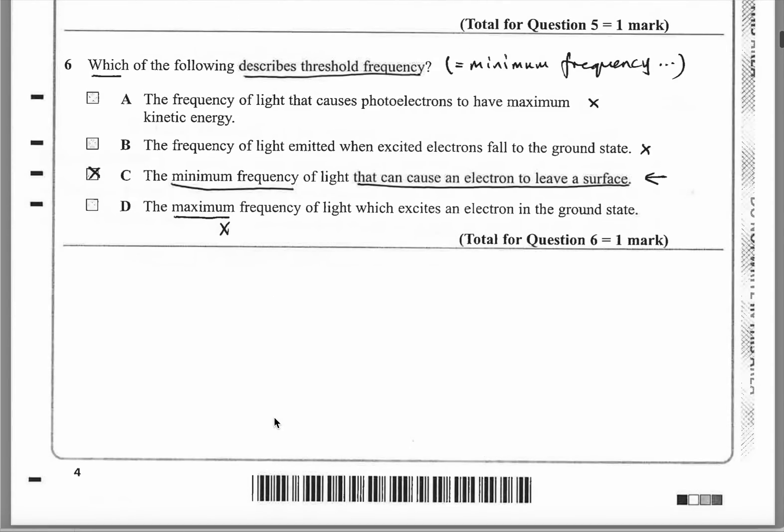Question 6 is the photoelectric effect. Which of the following describes what threshold frequency means? If you go straight to the answer, this is the answer - it's just knowledge. The minimum frequency of light that can cause an electron to leave a surface. That's the threshold frequency. If it's less than that, the energy will be less because the energy is proportional, directly proportional to the frequency, so it will not be emitted. It will not have enough to reach the surface of the metal and have any kinetic energy to escape.